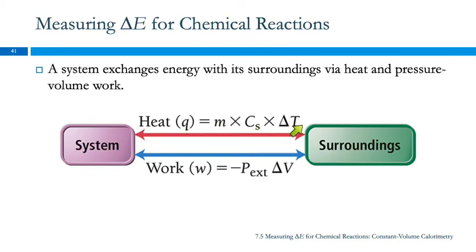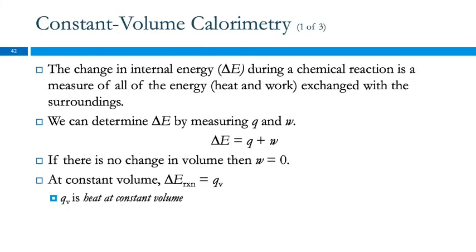Q equals MC delta T, or by work, negative P delta V, or a combination of the two. The change in internal energy is the sum of the heat and the work, so delta E equals Q plus W.